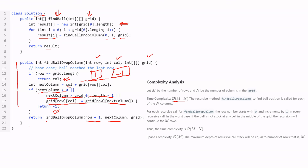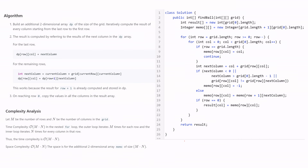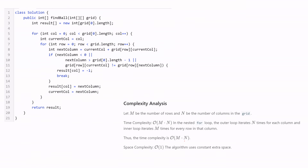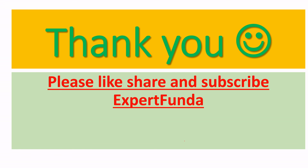We calculate the next column as column + grid[row][column]. Then we check three conditions: next column less than zero, next column greater than grid[0].length minus 1, or grid[row][column] not equal to grid[row][nextColumn]. If any condition is true, we return minus 1; otherwise we recurse with row+1 and nextColumn. The time complexity is O(m*n) and space complexity is O(m).